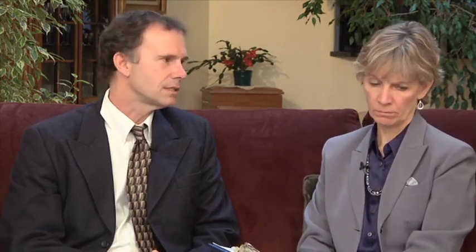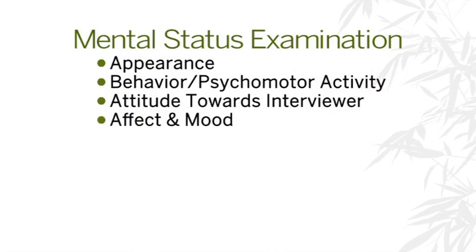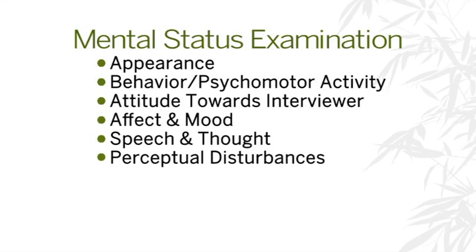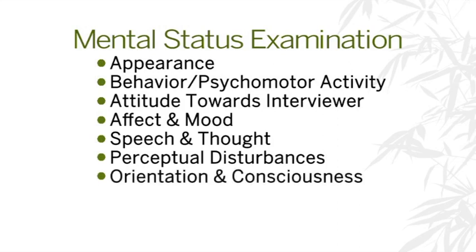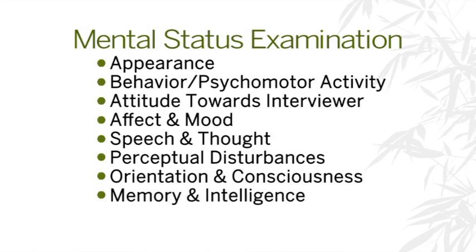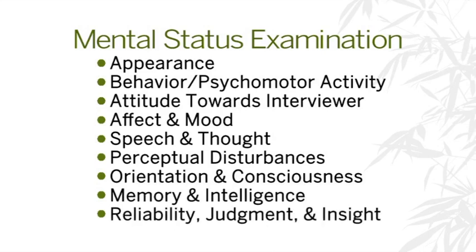The remaining six categories are usually assessed in a more direct way. These other six categories include affect and mood together, speech and thought together, perceptual disturbances, orientation and consciousness, memory and intelligence, as well as reliability, judgment, and insight.